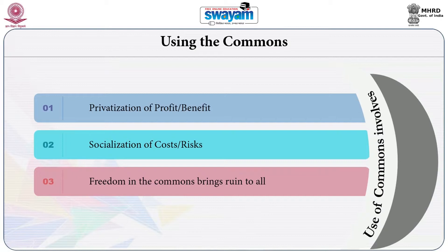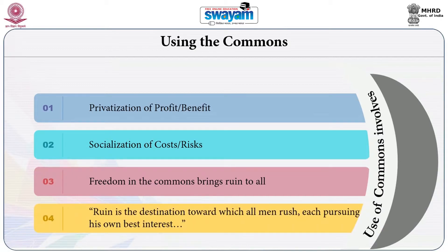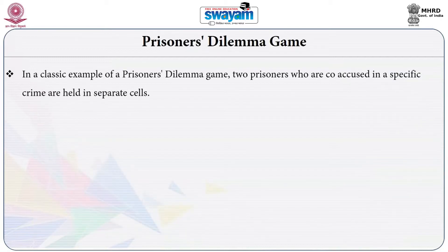Hardin used this analogy to argue that freedom of use or unregulated use in the commons brings ruin to all. The other idea is the prisoner's dilemma game. Game theory uses different games to explain interactions between actors, and the prisoner's dilemma is one of the most popular games used in game-theoretic analysis to explain the interaction of two different stakeholders.